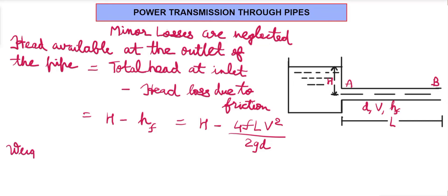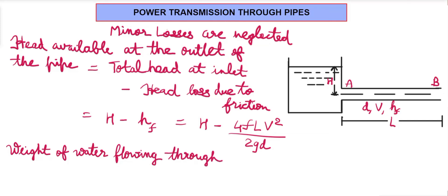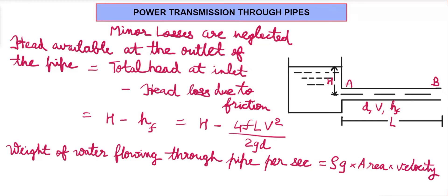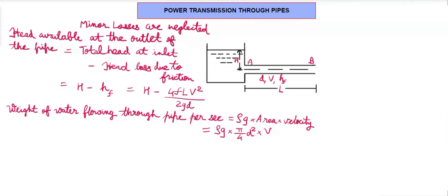Talking about the weight of water flowing through the pipe per second: weight is given by ρVg, and per second it becomes ρ·(V/T)·g. Since V/T equals discharge, and discharge equals area times velocity, the weight of water flowing through the pipe per second is ρg·A·V, where area is (π/4)D² and velocity is V.